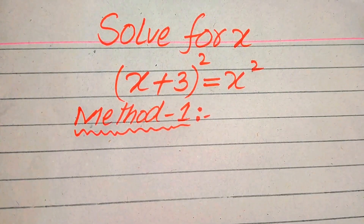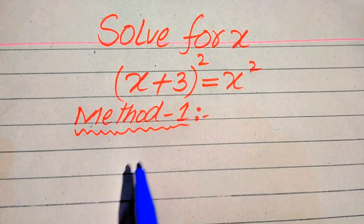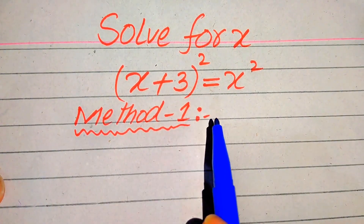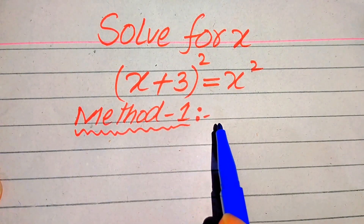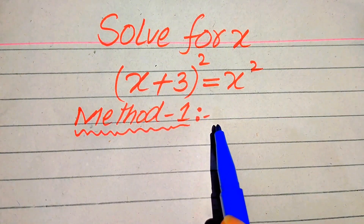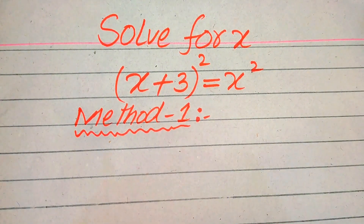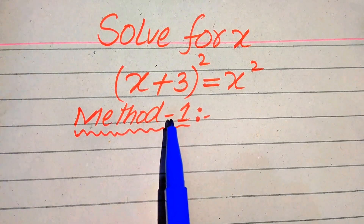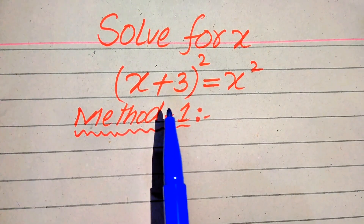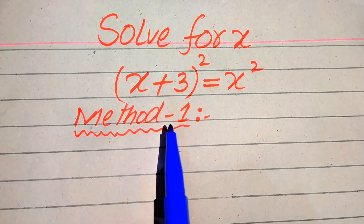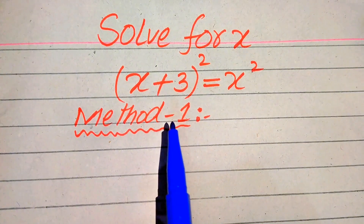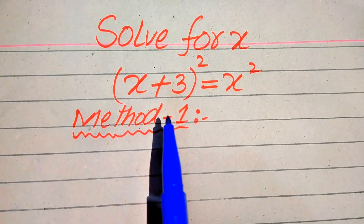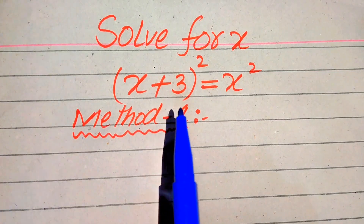Hello everyone. How to solve this problem for the values of x if we have (x + 3)² equals x²? We find all the roots of x. This is a quadratic equation but not in standard form, so first we convert this quadratic equation into standard form, and then we solve for the values of x.